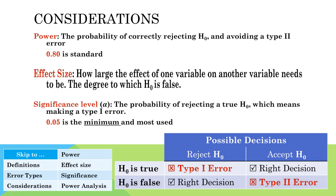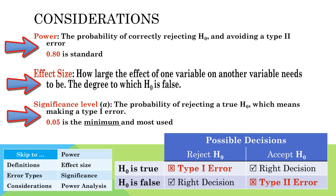The likelihood of making an error is related to statistical considerations that are used to determine the needed sample size for a study. When determining a sample size, researchers need to consider the desired power, expected effect size, and the acceptable significance level.